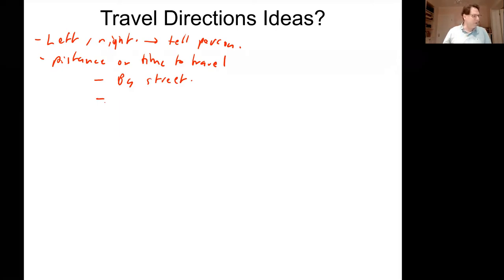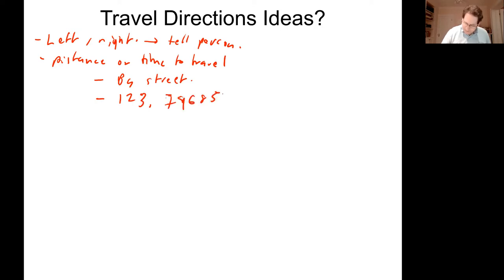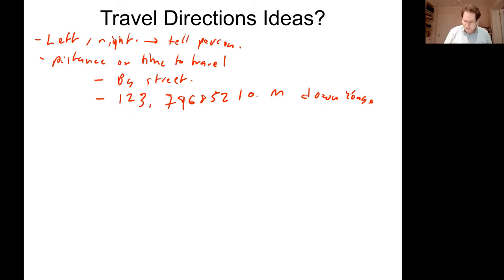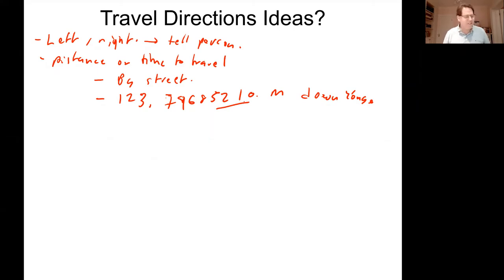There are helpful functions you wrote in milestone one: get length of street segment and get travel time for a street segment. Note that they return double precision, so if you aren't careful you'll print things like 'go 123.79685210 meters down Yonge.' Ken, how precise are you in your driving — can you get it down to the micron? That's a little too precise.